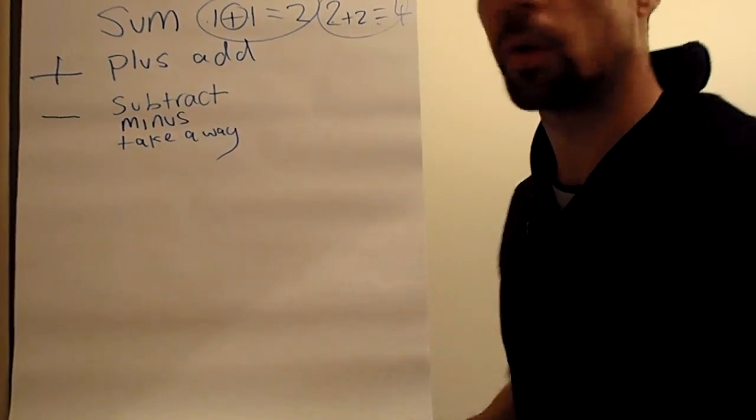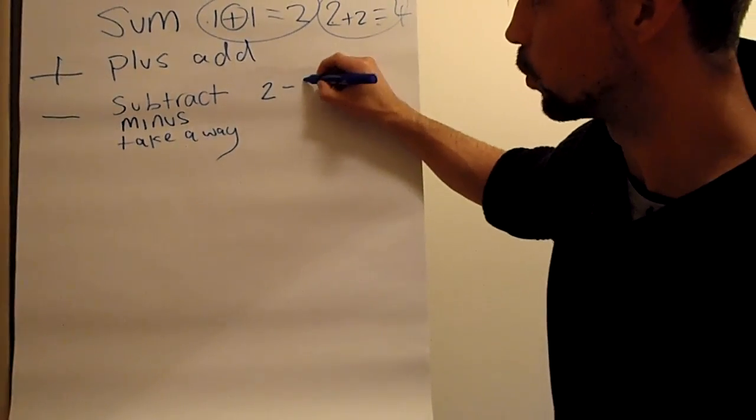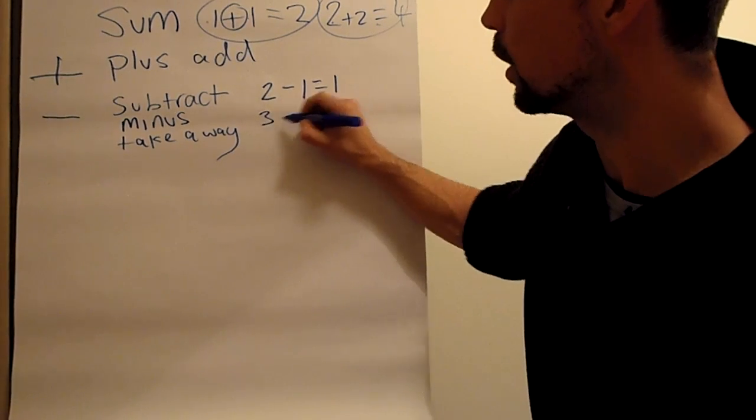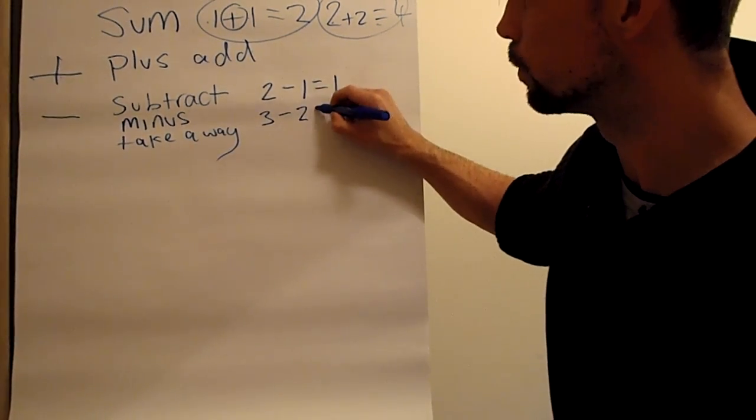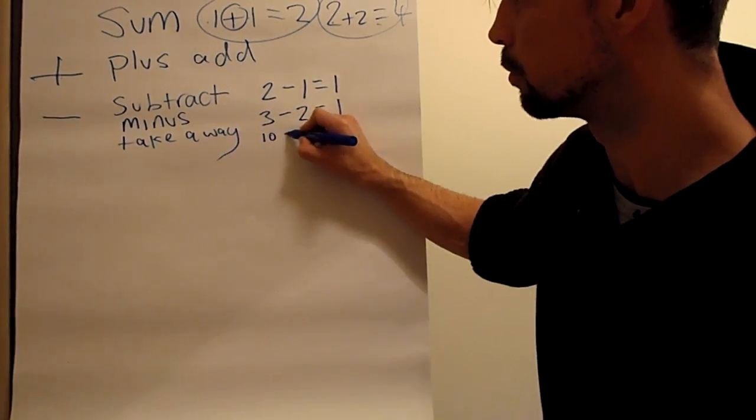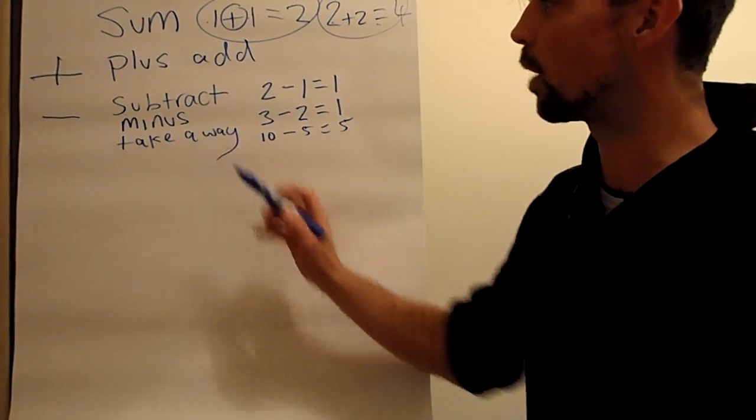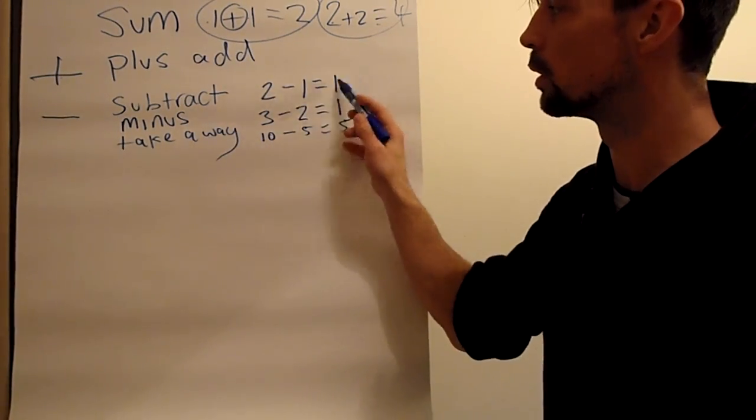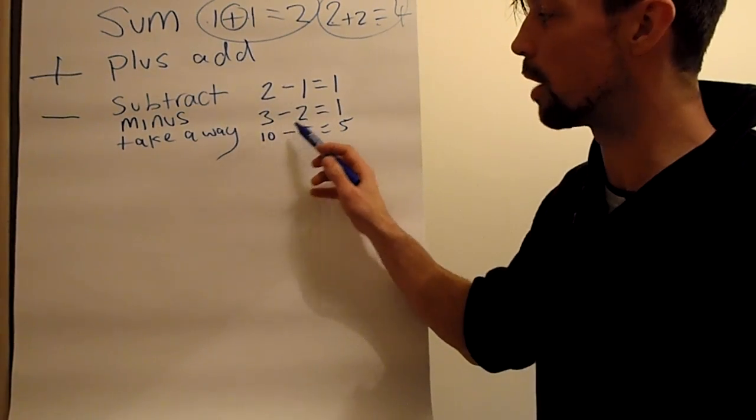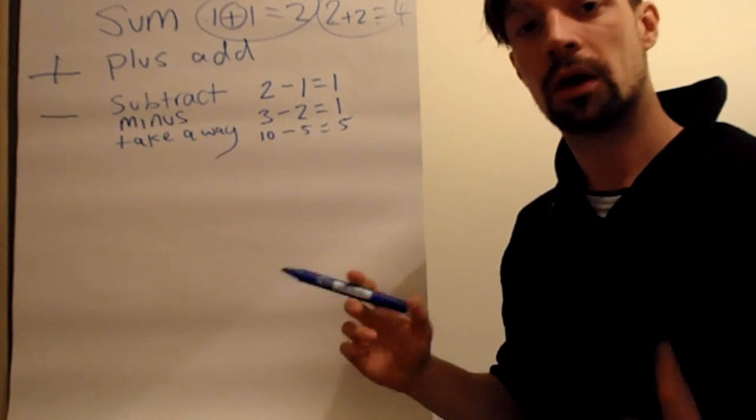This is 2 subtract 1 equals 1, 3 minus 2 equals 1, 10 minus 5 equals 5. Also take away: 2 take away 1 equals 1, 3 take away 1 equals 1, 10 minus 5 equals 5, 10 subtract 5 equals 5.